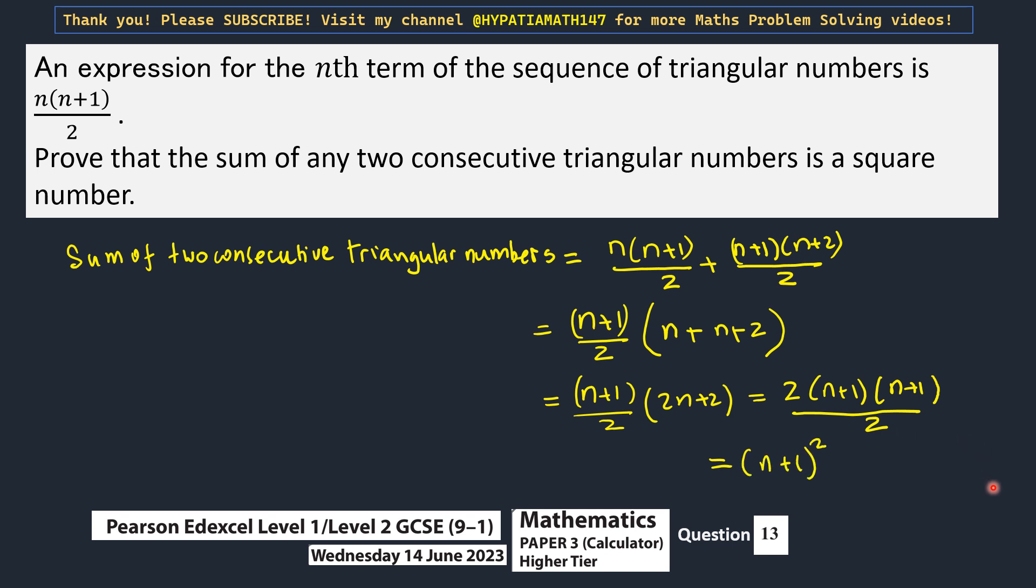So we have proved that the sum of any two consecutive triangular numbers is a square number, because n plus 1 all squared is a square number.